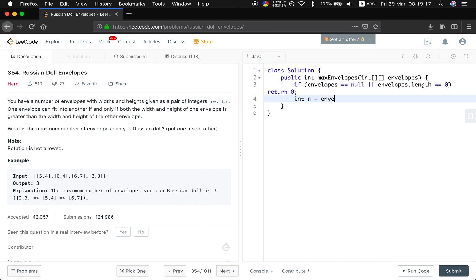If not the case, we get the n, which is the total number of the envelope. The length and the new array, DP array. Okay, that should be n. And we also need the length at the beginning to 0. And then we sort these envelopes.